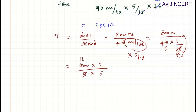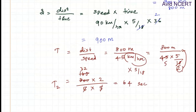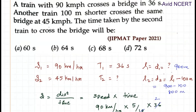Simplifying: 160 times 5 is 800, and 32 times 5 is 160. So 32 times 2 is 64 seconds. The time taken by the second train to cross the same bridge is 64 seconds. Thanks for watching — if you have any doubts, please let me know in the comments.